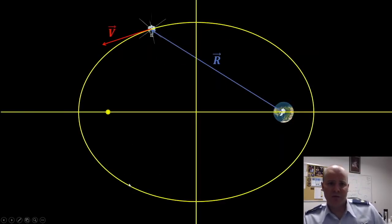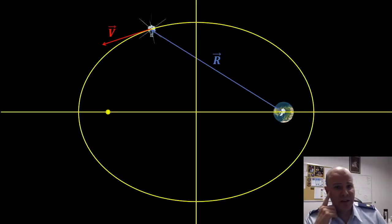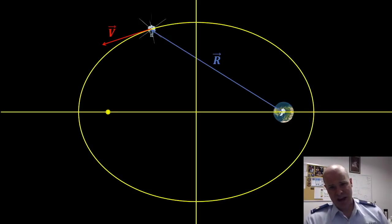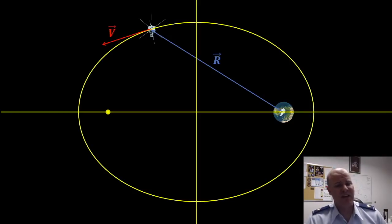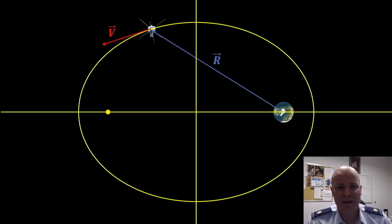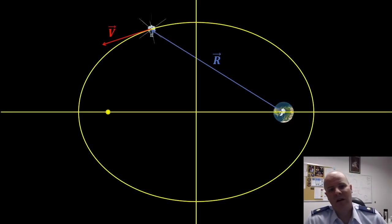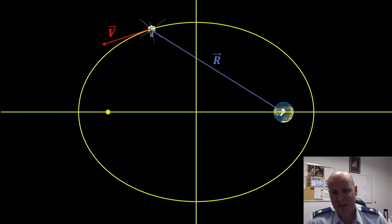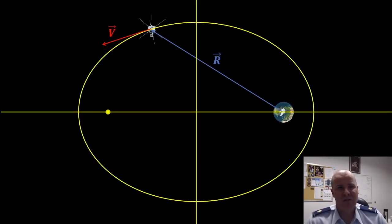The R vector, when described in the GEC frame, points from the center of the Earth to our satellite's position. However, our satellite is not static overhead. When we consider multiple R vector positions as they change with time, we can build a V vector, or velocity vector, to describe its motion. The V vector will point in the direction of spacecraft motion and will be tangent to the orbital path. Using the R vector and the V vector, it's possible to describe the spacecraft's current position. However, even with this current description, it's difficult to imagine what the overall orbit looks like just from these two 3D vectors.